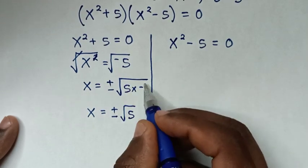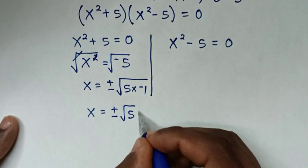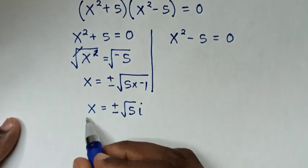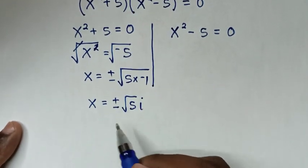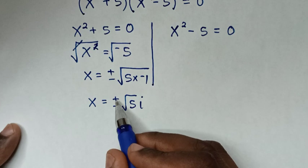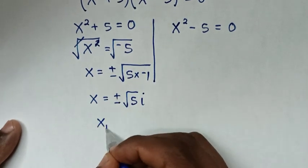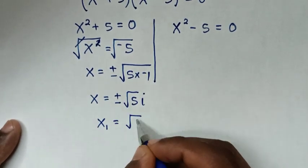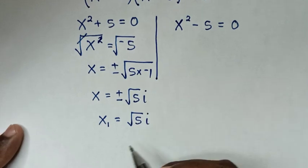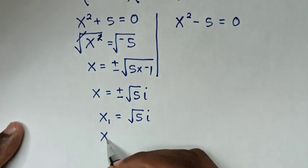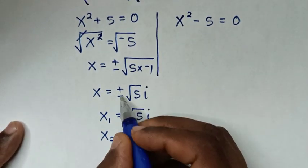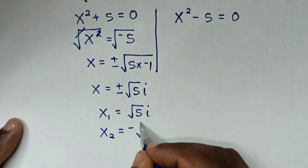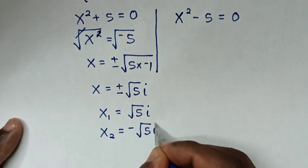Since √(-1) = i, we get x = ±√5 · i. So the first solution is x₁ = √5·i, and the second solution is x₂ = -√5·i.